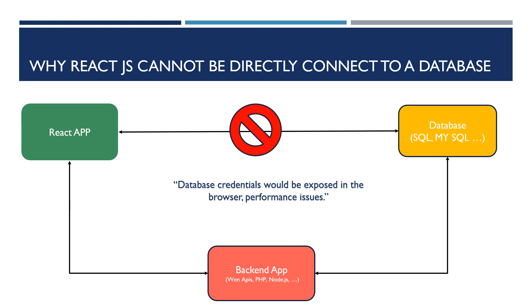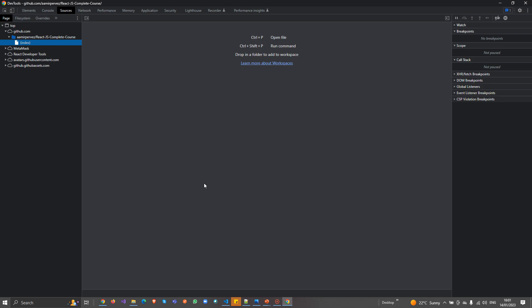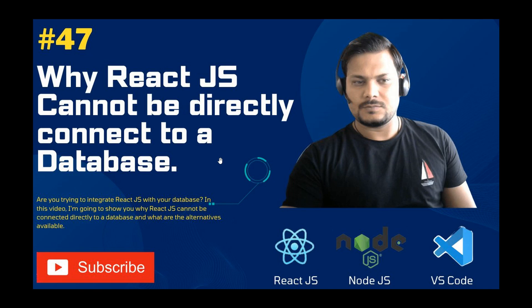In the next video I'm going to show you how, if you have any sensitive data — like API keys, passwords, usernames, or URLs — you can actually hide that data in React.js applications, so that even if users do inspect element, they cannot easily see it.